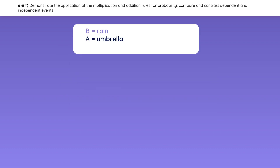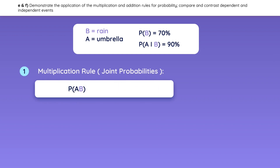In this example, we are given the probability of rain, which is 70%, and the probability of bringing an umbrella given that it rains, which is 90%. To find the joint probability that it rains and you bring an umbrella, you can use the multiplication rule. The probability of A and B is equal to the probability of A given B times the probability of B.